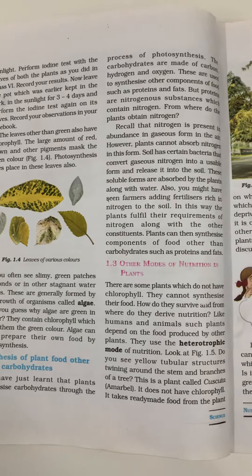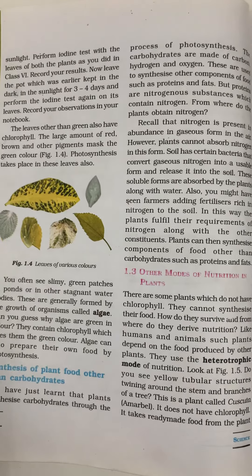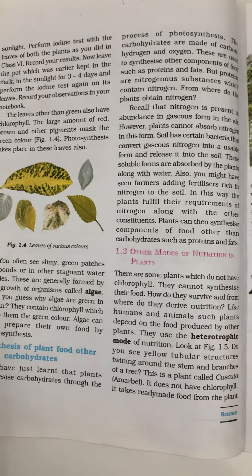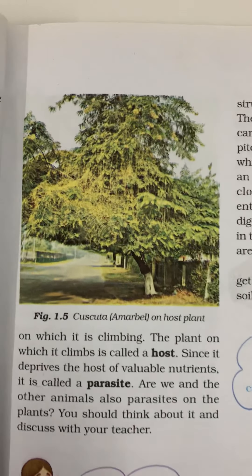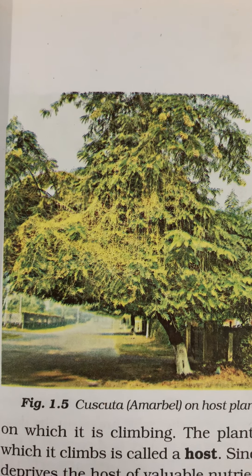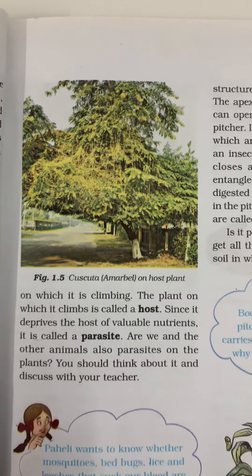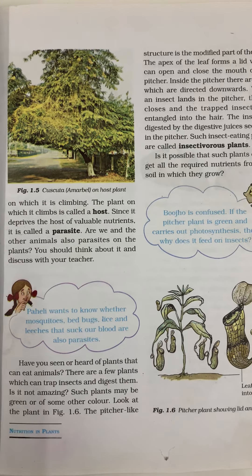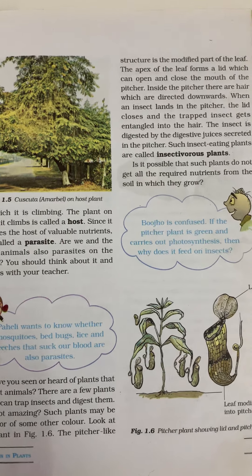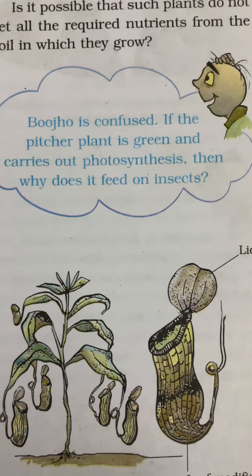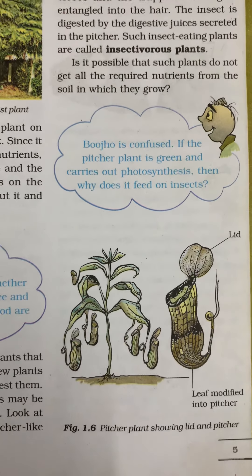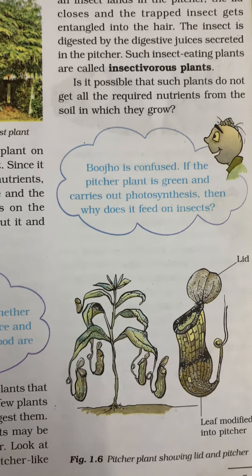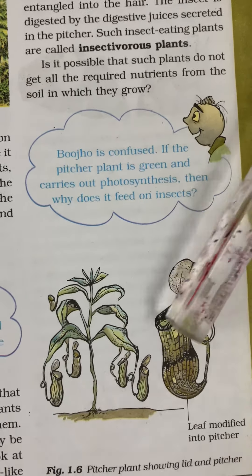Now we come to the heterotrophic mode of nutrition — depending on others. The first form is parasites. You might have seen Cuscuta, the amarbel, the yellow vine you may have seen around your house. These are totally dependent on the green plant for their food and are called parasites. You might have heard about the pitcher plant — these are insectivorous plants that develop a mechanism where when any insect sits on them, they close their lid and digest that animal.